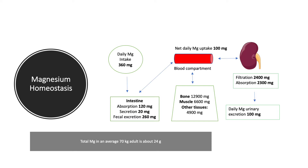We end up with a net uptake of magnesium of 100 milligrams. The magnesium in the bone, muscle, and other tissues is in equilibrium — in a state of exchange — with the magnesium in the blood compartment. The kidneys filter 2,400 milligrams of magnesium a day, but reabsorb most of it — 2,300 milligrams — and the net daily urinary magnesium excretion is 100 milligrams. So 100 milligrams goes in and 100 milligrams comes out, representing the steady state.